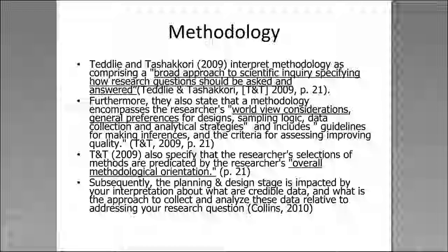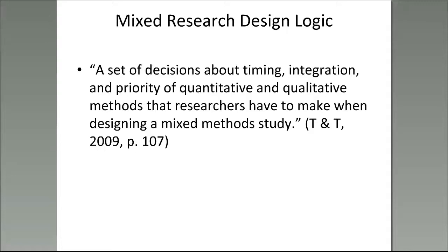Methodology gives an indication of the overall methodological orientation of the researcher. Why this is important for sampling is that your interpretation about what you consider credible data and how you intend to collect and analyze your data — very much relative to your research question — impacts the sampling decisions that you make throughout the research process. In other words, who you are as a researcher impacts your sampling decisions.